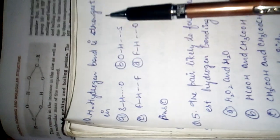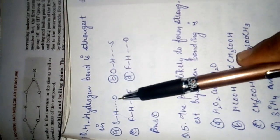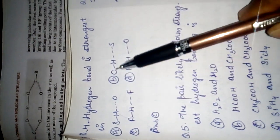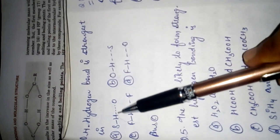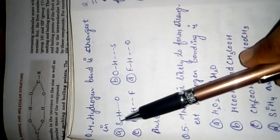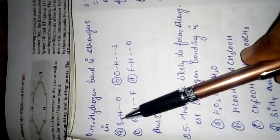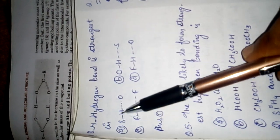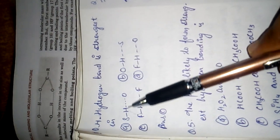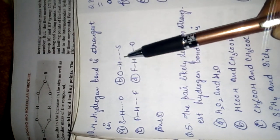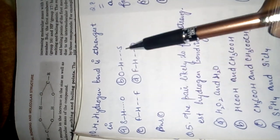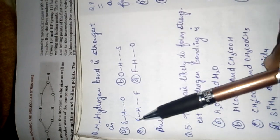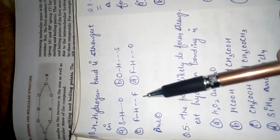Hydrogen bond is strongest in which of the following: S-H…O, H-S…H, H-F…H, or H-O…H? For S-H and H-F combinations, there are two different electronegative elements, so these are not the strongest. The correct answer is H-O…H because both electronegative elements involved are the same.